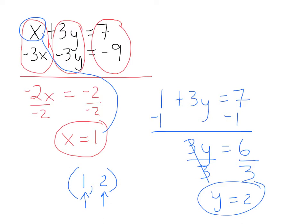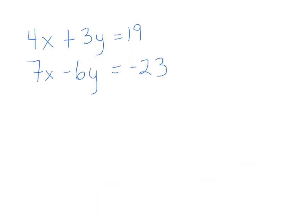So let's review real quick. I added up the x's and I added up the y's. So when I added the x's, I got negative 2x. When I added the y's, it went away. And so then I knew that I could solve for x.